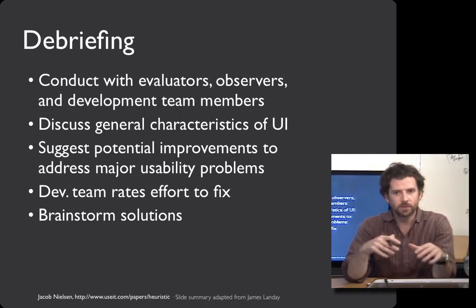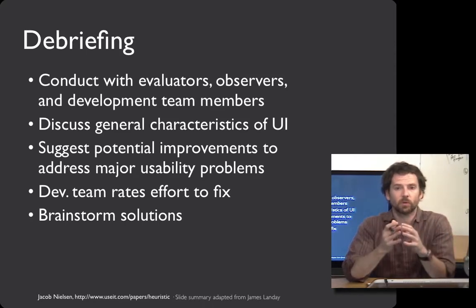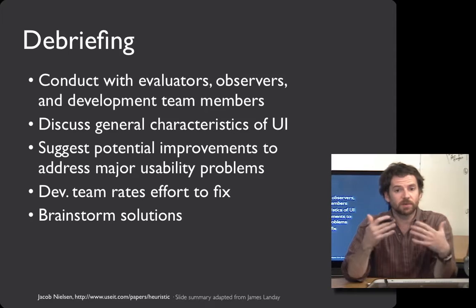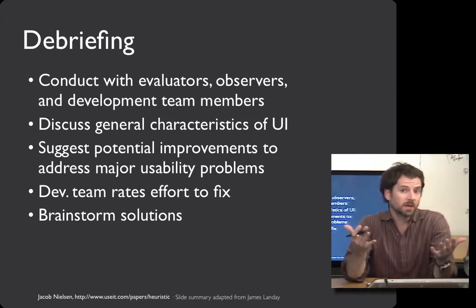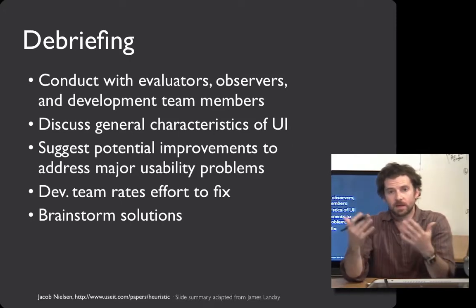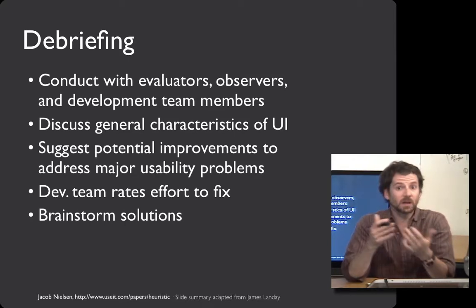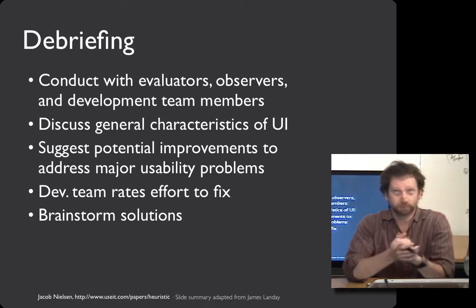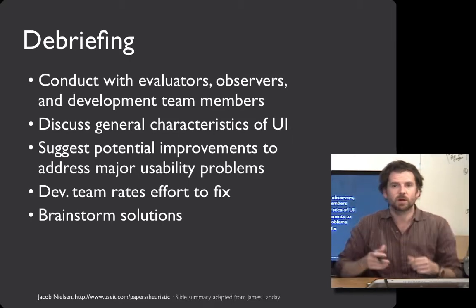Finally, after all your evaluators have gone through the interface, listed their problems, and combined them in terms of severity and importance, you'll want to debrief with the design team. This is a nice chance to discuss general issues and qualitative feedback, and to go through each line item and suggest improvements. In this debrief session, it can be valuable for the development team to estimate the effort required to fix each problem. Something minor like wording — low severity and easy to fix — you go ahead and fix it. Something catastrophic may take more effort but its importance leads you to fix it anyway. Some things just don't make sense to deal with right now given the cost involved. And this debrief session can be a great way to brainstorm future design ideas while all stakeholders are in the room and the issues are fresh in their minds.